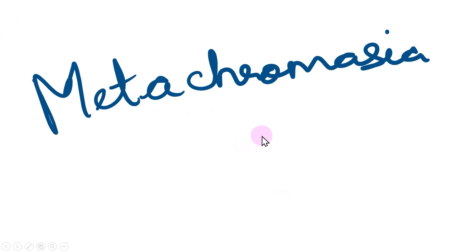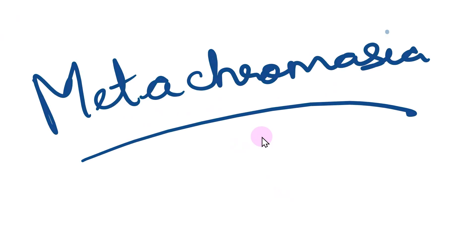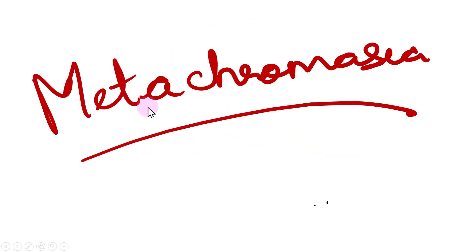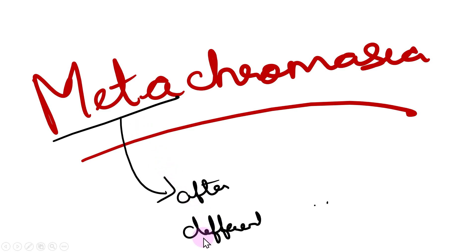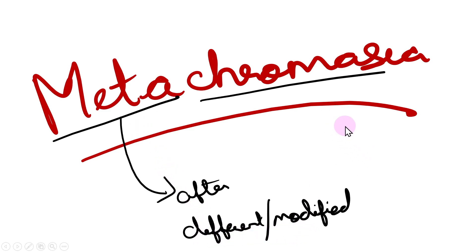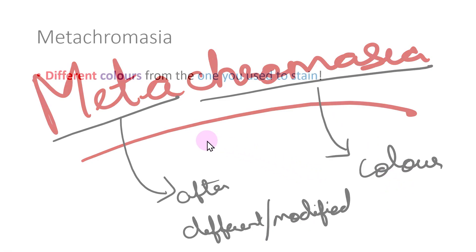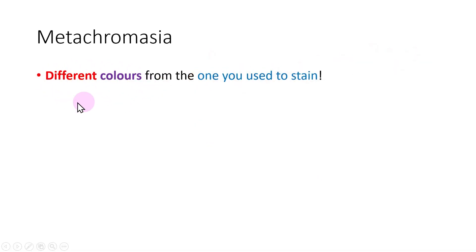What is metachromasia? Hello everyone and welcome to the AIR Anatomy channel. Metachromasia comes from two words: 'meta' which means after but can be taken as different or modified, and 'chromasia' which denotes color. So metachromasia is a phenomenon where parts of the tissues will take different colors from the one that was used to stain.